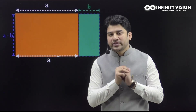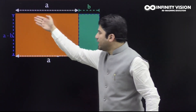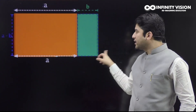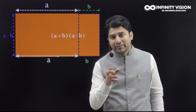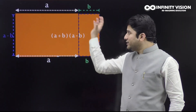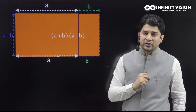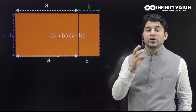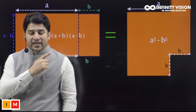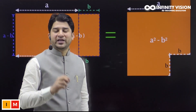It would look something like this. Now if I ask you what is the dimension of this big rectangle, you are going to say one side is a + b and the other side is a - b. So the area of this big rectangle is going to be (a + b)(a - b). This complete big rectangle has area (a + b)(a - b), which is nothing but equal to a² - b².